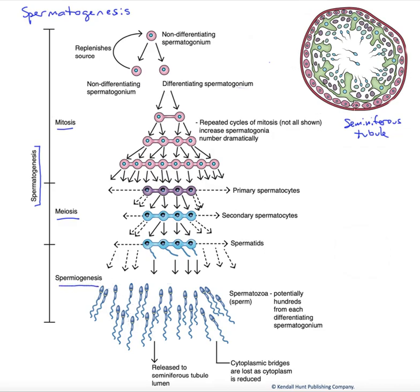Now, for reference, we have our seminiferous tubule up here in the upper right, and this is where spermatogenesis is taking place. If we were to take a section of this and put a block around it, we're going to take that and essentially blow it up over here and examine just the cells that are involved in spermatogenesis.